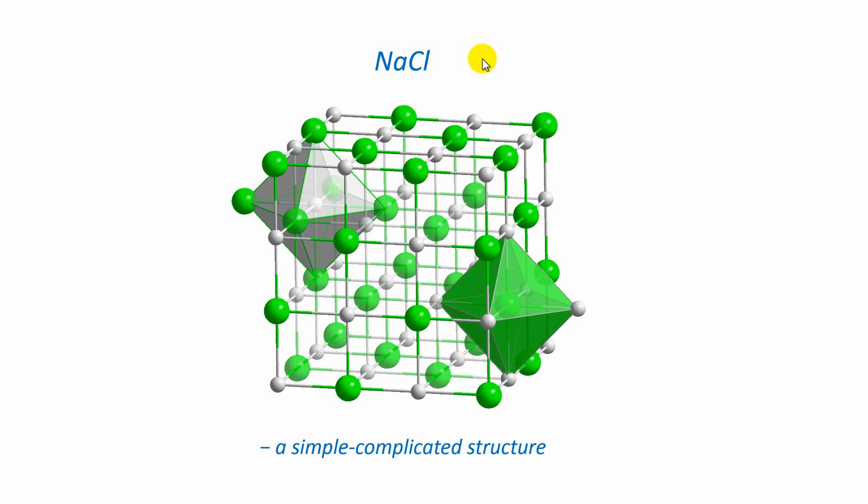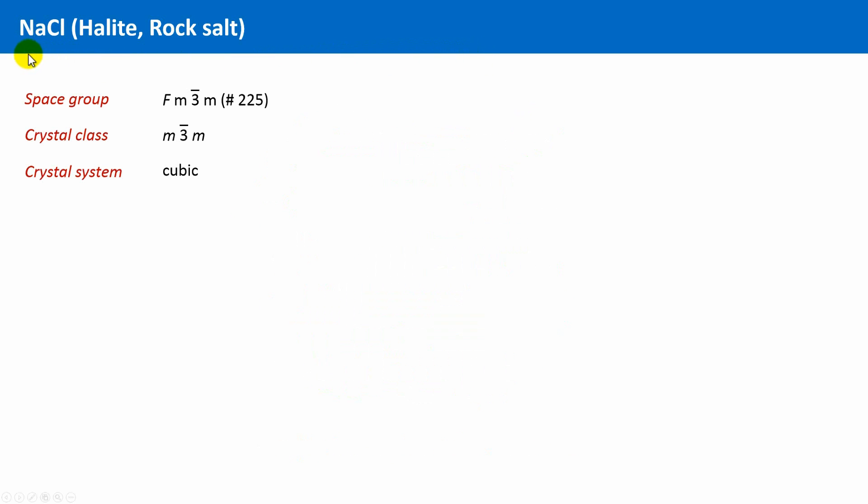Anyway, let's have a closer look at its structure. Chemically viewed, rock salt or halite, which is the mineral name, is sodium chloride. It crystallizes in the space group Fm-3m, which is the space group with the number 225. The crystal class is then m-3m, and it belongs to the cubic crystal system, which means that due to symmetry reasons all edges are equal in length, and all angles are 90 degrees.